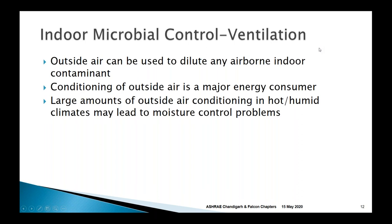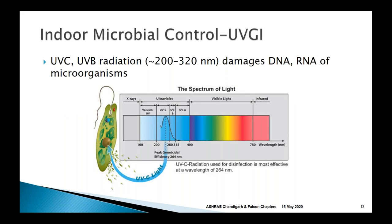Ventilation will dilute all airborne contaminants, but depending on the climate it can be a very expensive energy proposition — particularly in hot, humid climates. UVGI is a technology that inactivates microorganisms rather than removing or displacing them. It uses mainly ultraviolet C and ultraviolet B radiation in the 200–320 nanometer spectral range, which damages the DNA and RNA of viruses, bacteria, and fungi.